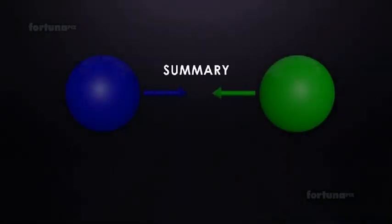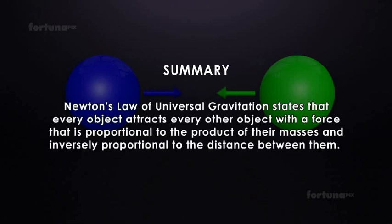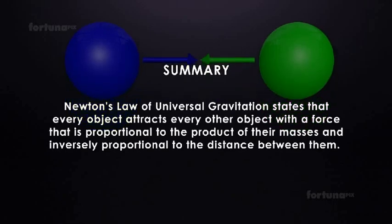Summary: Newton's law of universal gravitation states that every object attracts every other object with a force that is proportional to the product of their masses and inversely proportional to the distance between them.